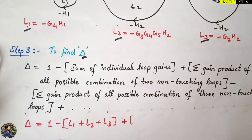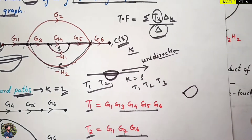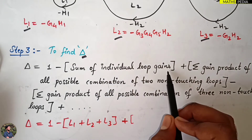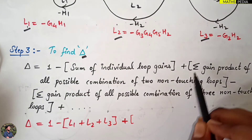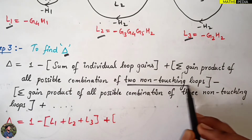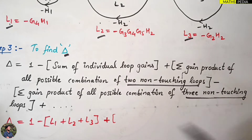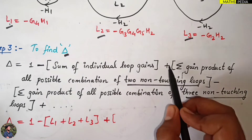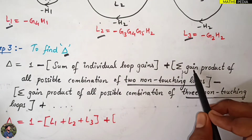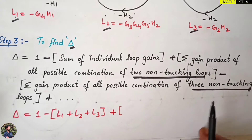Step three is to find the delta value. Delta appears in the denominator of Mason's Gain Formula. The formula for delta is: 1 minus the sum of individual loop gains, plus the summation of gain products of all possible combinations of two non-touching loops, minus the summation of gain products of all possible combinations of three non-touching loops, and so on, alternating signs.